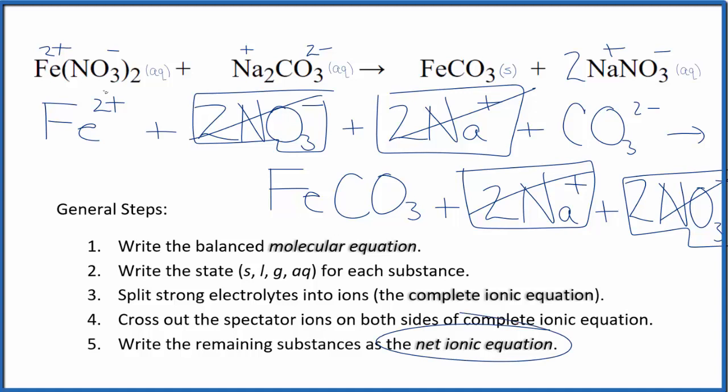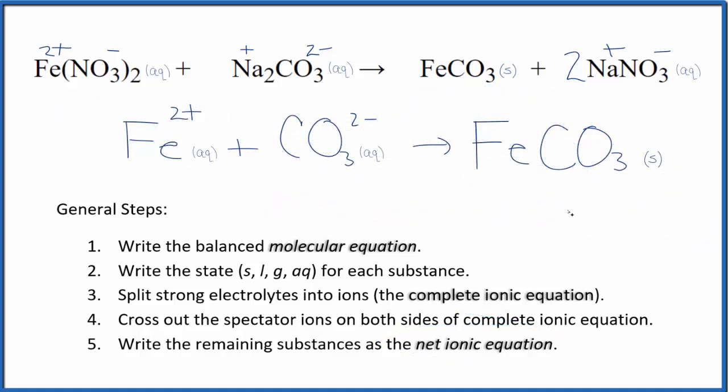What's left, that's the net ionic equation for Fe(NO3)2, plus Na2CO3. I'll clean this up, write the states. We'll have our net ionic equation. So this is the balanced net ionic equation for iron 2 nitrate plus sodium carbonate.